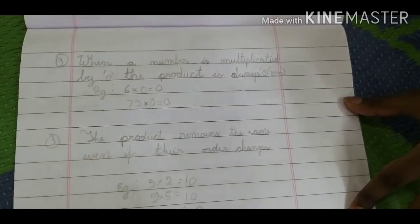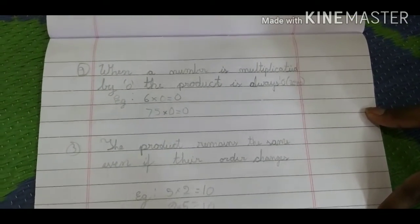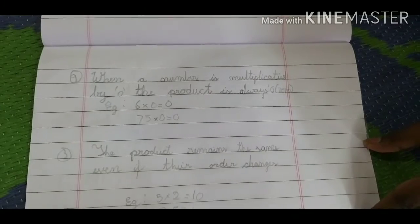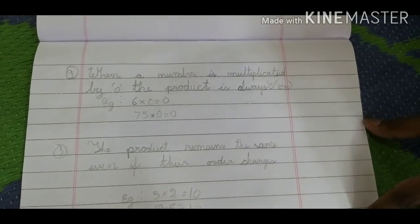Now the second property is when a number is multiplied by zero, the product is always zero.